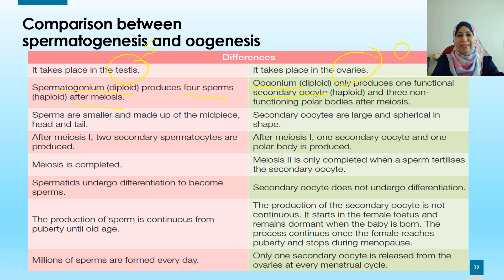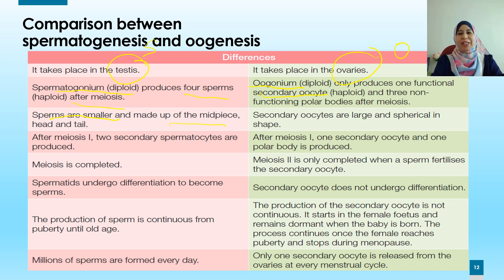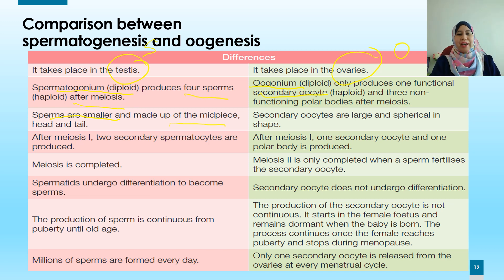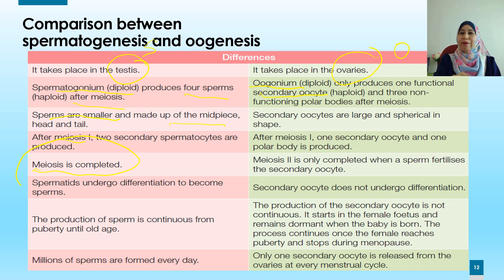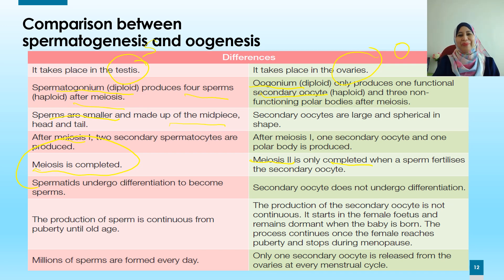The polar bodies will later disintegrate. Third, in spermatogenesis the sperm are smaller and made up of a midpiece, head, and tail; whereas in oogenesis the secondary oocyte is large and spherical in shape. Fourth, in spermatogenesis after meiosis 1, two secondary spermatocytes are produced; in oogenesis after meiosis 1, only one secondary oocyte and one polar body are produced. Fifth, in spermatogenesis meiosis is completed, whereas in oogenesis meiosis 2 is only completed if the sperm fertilizes the secondary oocyte.